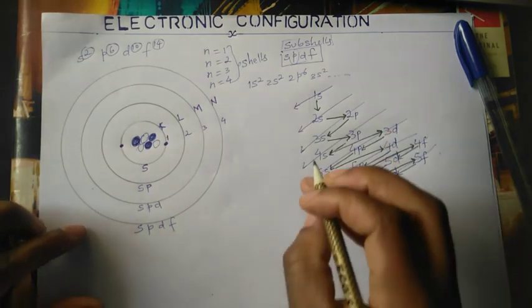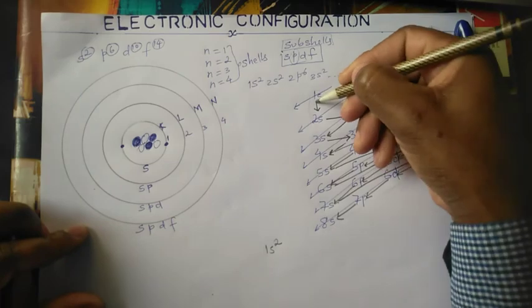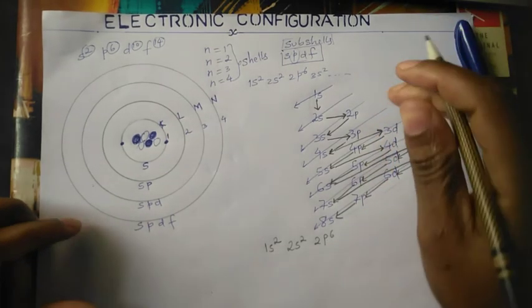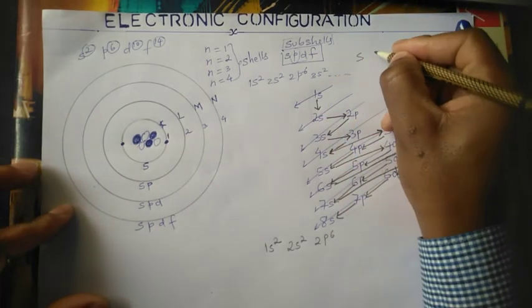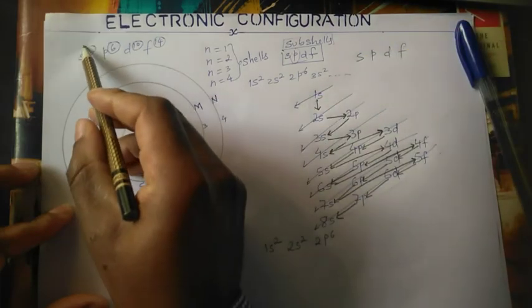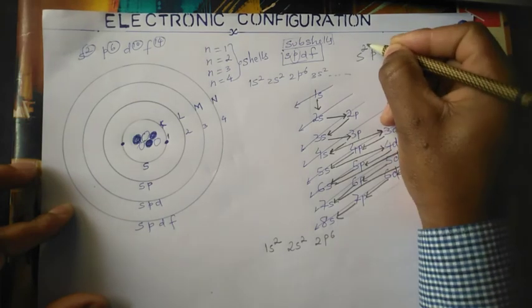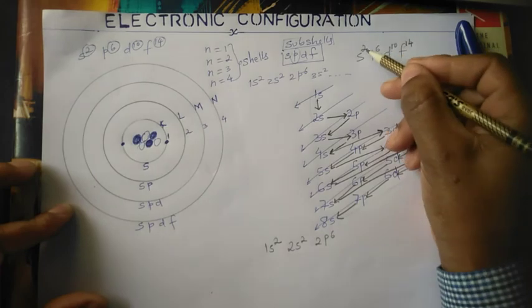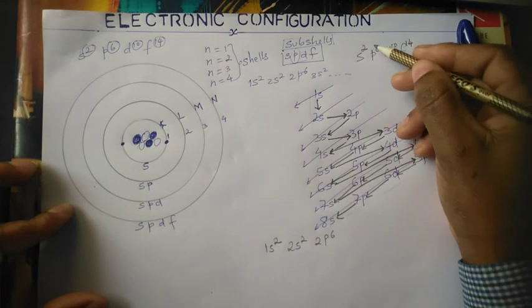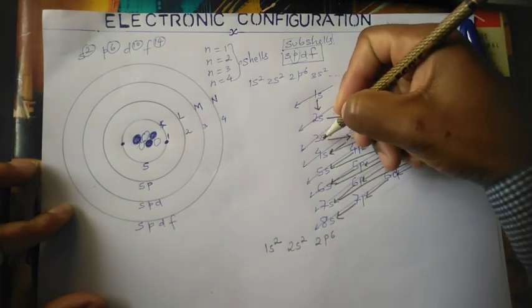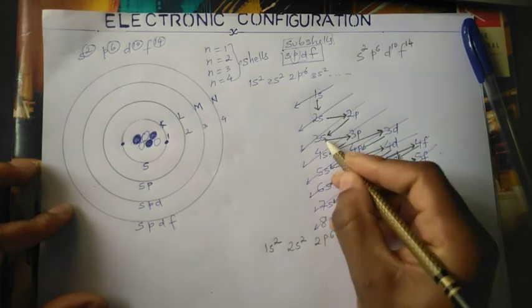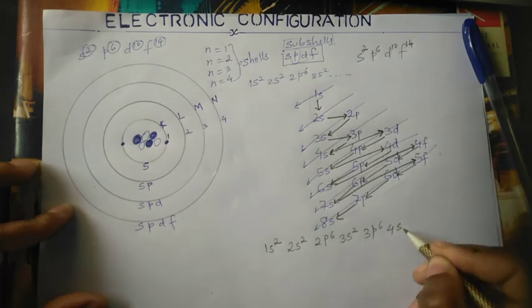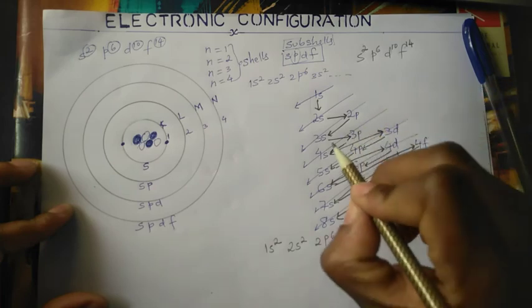Now let's review the full sequence: 1s2 → 2s2 → 2p6 → 3s2 → 3p6 → 4s2 → 3d10 → 4p6 → 5s2 → 4d10. You must follow this order. Always remember: s carries 2 electrons, p carries 6, d carries 10, and f carries 14. Draw this diagram in class so you know where you're going. After 3d10 we go to 4p6, then 5s2, and so on.